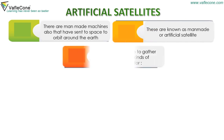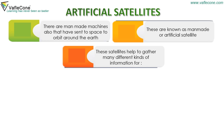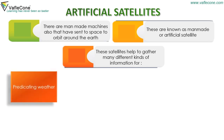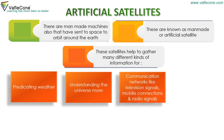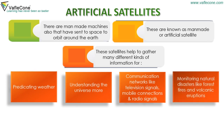These satellites help to gather many different kinds of information for predicting weather, understanding the universe, communication networks like television signals, mobile connections, and radio signals, and monitoring natural disasters like forest fires and volcanic eruptions.